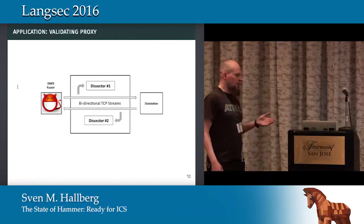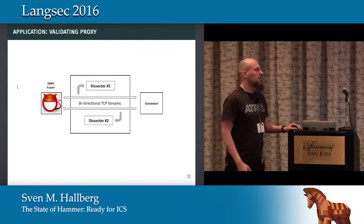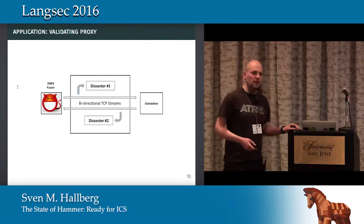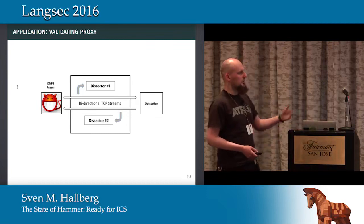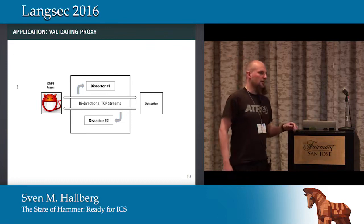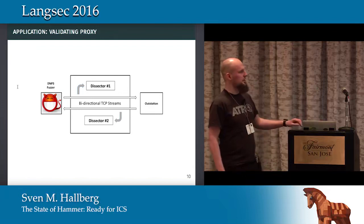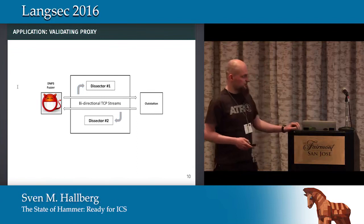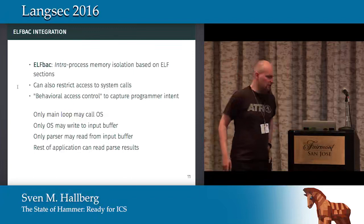As a very simple application, we built a validating proxy for this protocol, where we intercept a TCP stream, run both directions of the stream through our parser, drop anything that isn't valid, and pass anything on that is. Then we connect a fuzzer or something else to that. Really simple, really basic app.